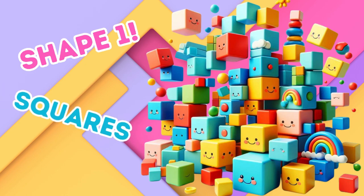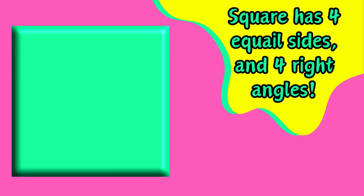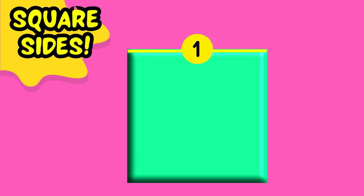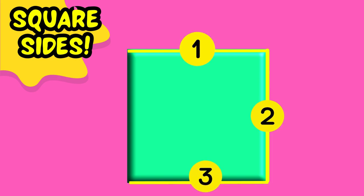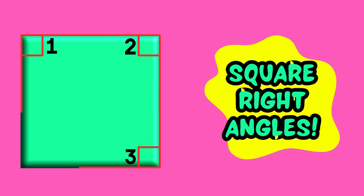Shape 1: Squares. A square has four equal sides and four right angles. Side 1, Side 2, Side 3, Side 4. Angle 1, Angle 2, Angle 3, Angle 4.